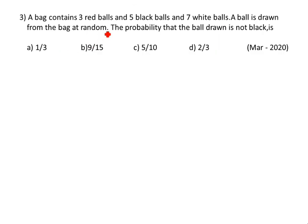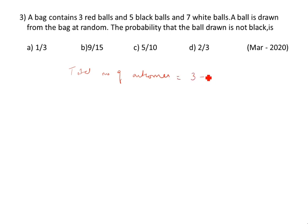Next question: a bag contains 3 red balls, 5 black balls, and 7 white balls. A ball is drawn from the bag at random. Find the probability that the ball drawn is not black. Total number of outcomes equals 3 plus 5 plus 7, which is 15.